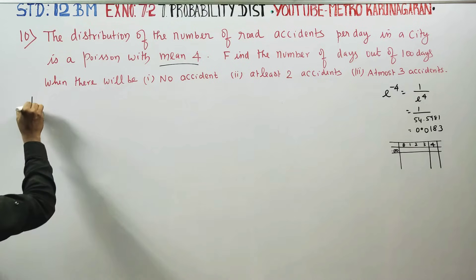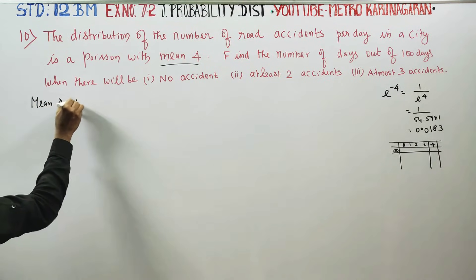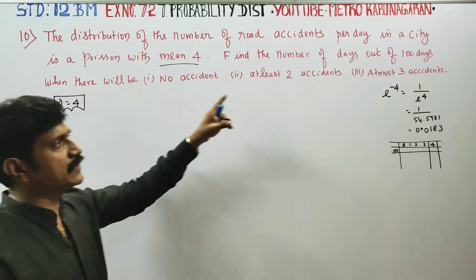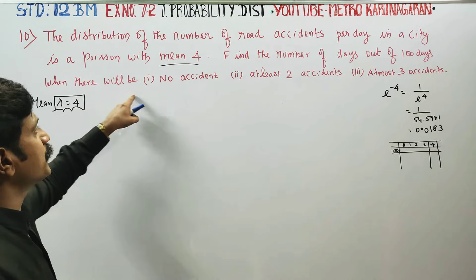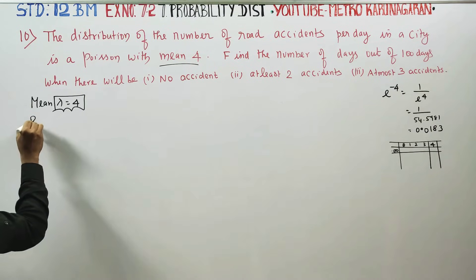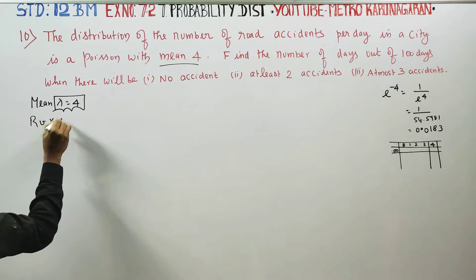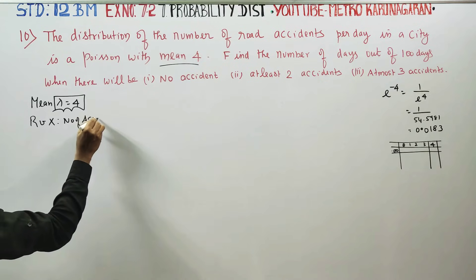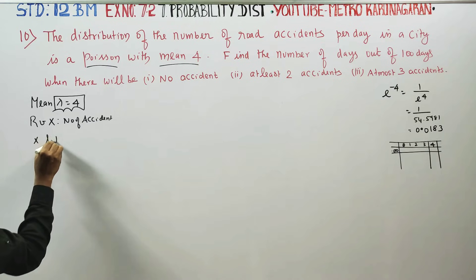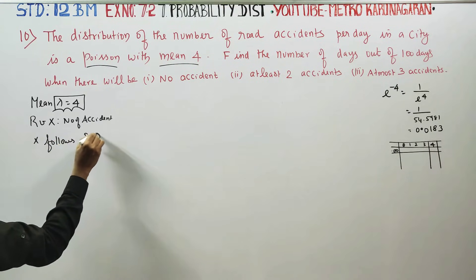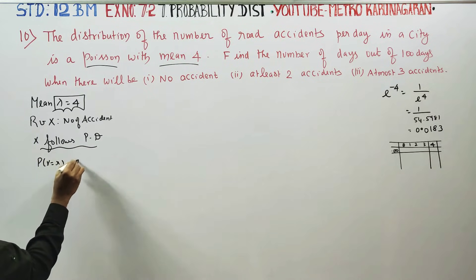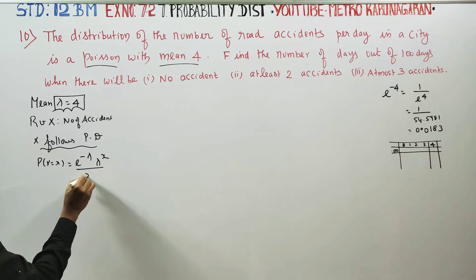The mean value is given, and mean is taken as lambda. So lambda value is 4. Since it follows a Poisson distribution, the formula for the Poisson distribution is: probability of X equal to x is equal to e power minus lambda, multiplied by lambda power x, divided by x factorial.